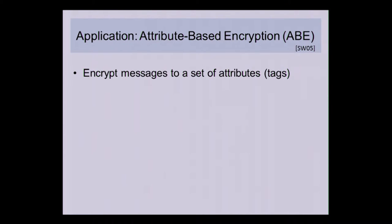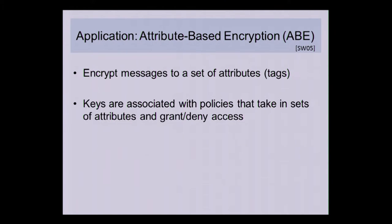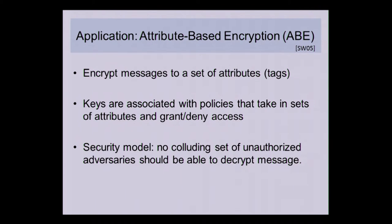The particular application we're going to look at is attribute-based encryption — the same setting as the last two talks — where we want to encrypt messages under a set of attributes or tags, and we associate keys with policies that either grant or deny access to the underlying plaintext. Our security model includes collusion, so no colluding set of unauthorized adversaries should be able to decrypt the message.